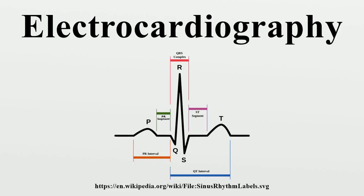Therefore, the lead that is best aligned with the axis of ventricular depolarization will have the tallest positive QRS complex. The normal QRS axis is generally down and to the left, following the anatomical orientation of the heart within the chest. An abnormal axis suggests a change in the physical shape and orientation of the heart, or a defect in its conduction system that causes the ventricles to depolarize in an abnormal way.